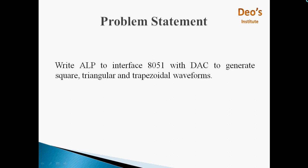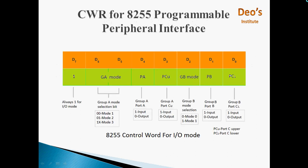Before that, this interfacing of 8051 and DAC is done through 8255. 8255 is a PPI — that is, Programmable Peripheral Interface — which interfaces the 8051 microcontroller with other devices.